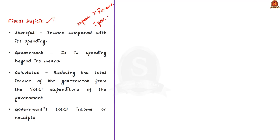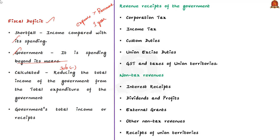Fiscal deficit can be described as a shortfall in the government's income compared with its spending. When a government is facing a fiscal deficit, it means it is spending beyond its means — spending more than it is receiving as revenue. The fiscal deficit is calculated by subtracting the total income of the government from the total expenditure of the government.